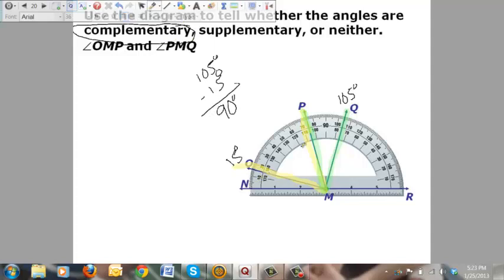Another way to look at this is you could say this angle is going to go from 15 to 75. So, angle OMP is going to be a 60 degree angle. And then angle PMQ goes from 75 to 105, and that's 30 degrees. And when you add those two together, you get the same 90 degrees, once again, being a complementary angle.